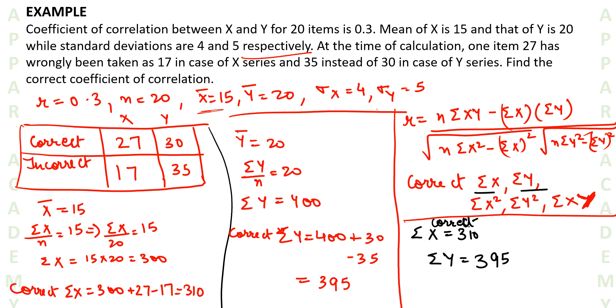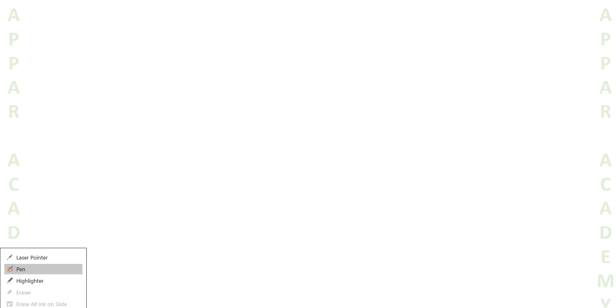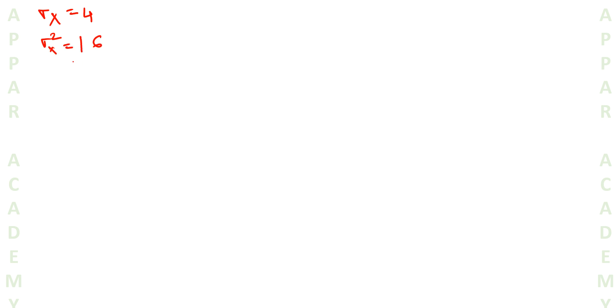Next is Σx². From the given data, we can find Σx² using the standard deviation and variance. Standard deviation of x is 4, so variance of x equals 16. Now, variance of x equals Σx² divided by n minus x̄ squared.